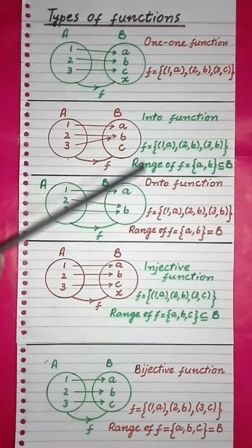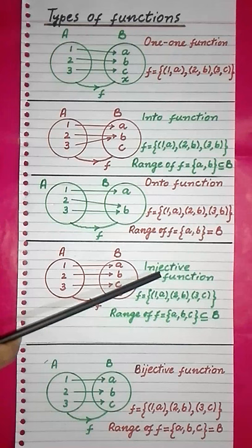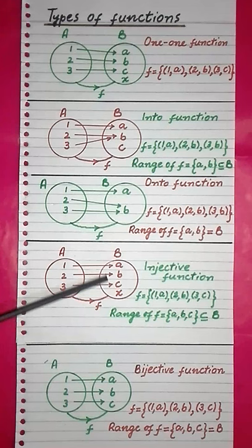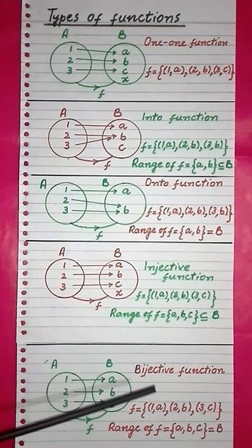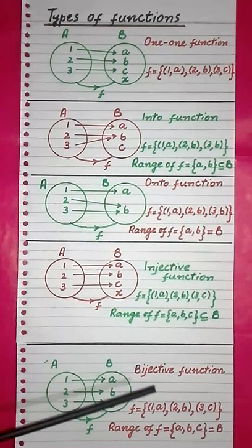So students, if a function is both one-one and into, then we call it an injective function. Like here, the range is smaller than the co-domain and the second elements are non-repeated. Now if a function is both one-one and onto, then we call it a bijective function. Like here, the range is equal to the co-domain and the second elements are non-repeated.